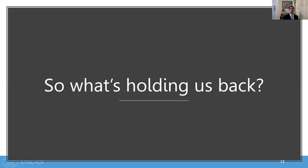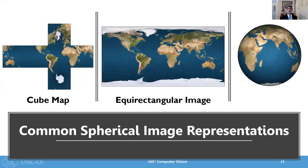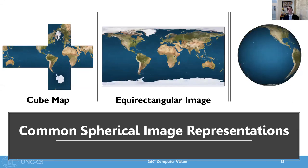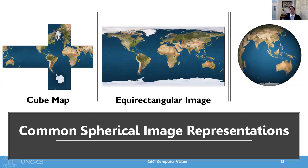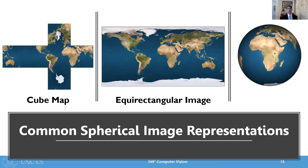So with all these exciting opportunities, the real question is, what's holding us back? Well, the simple answer is spherical distortion. Distortion warps images in a location dependent manner, which results in local content deformation that impedes our current computer vision algorithms. Because many computer vision algorithms have been designed around the concept of an image plane, we need to first project our spherical image onto a planar representation in order to apply the algorithms. Now, take a look at the two most popular spherical image representations that we use. On the left, we see the cube map. This is the projection of a sphere onto an inscribing cube.